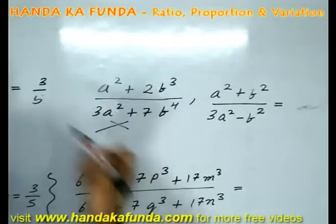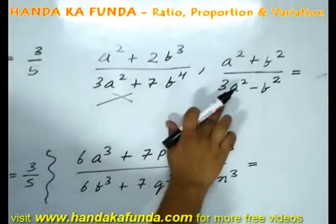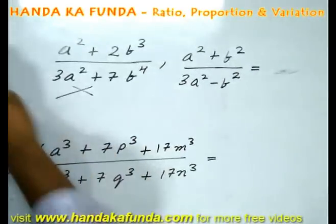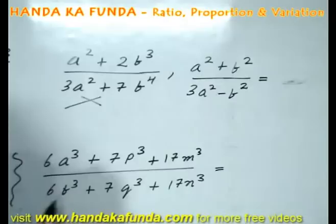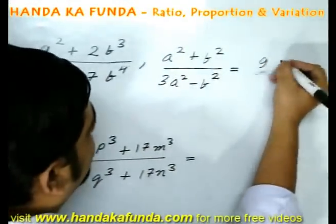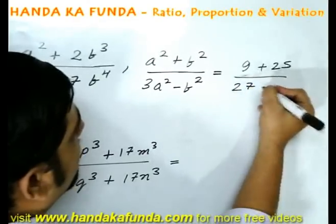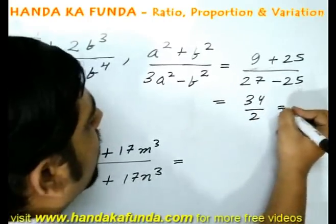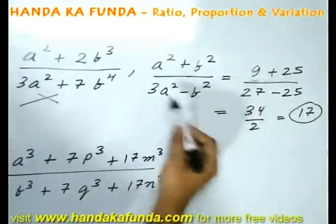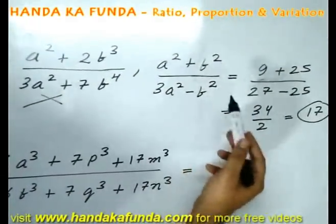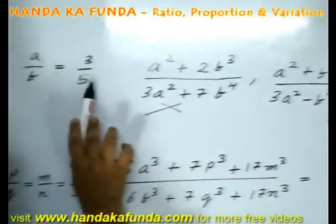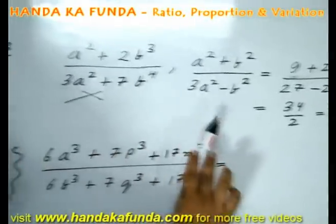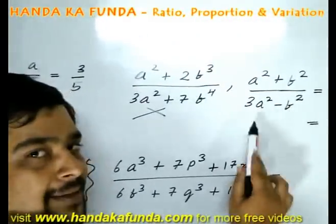But a simpler way to solve it is, you have the value of A by B as 3 by 5. In this equation, once you have figured out that it is solvable, that is all degrees are same, just put A is equal to 3 and B is equal to 5. See what you will get. You will get 9 plus 25 by 27 minus 25. That is effectively 34 by 2 or 17. My point is, you can directly obtain an answer instead of dividing and solving it ideally by just putting in the values A is 3 and B is 5. But please remember, this method is applicable if and only if all the degrees are same.